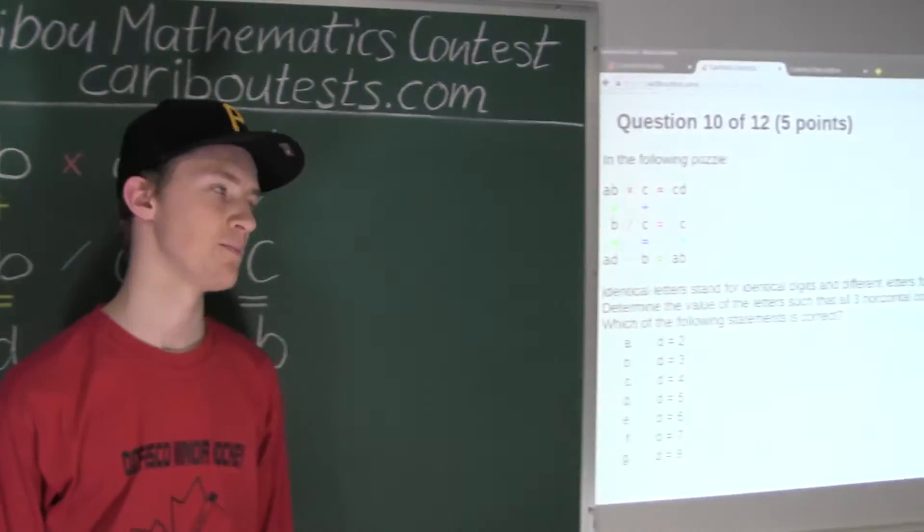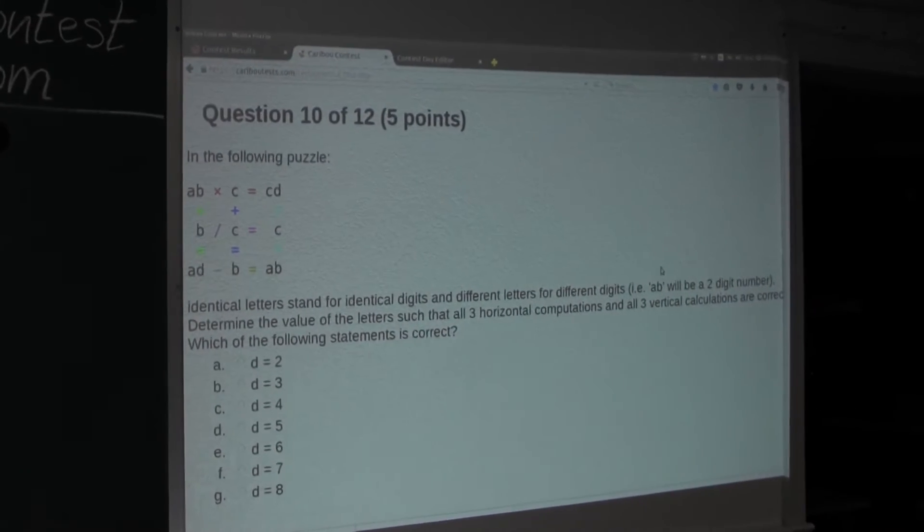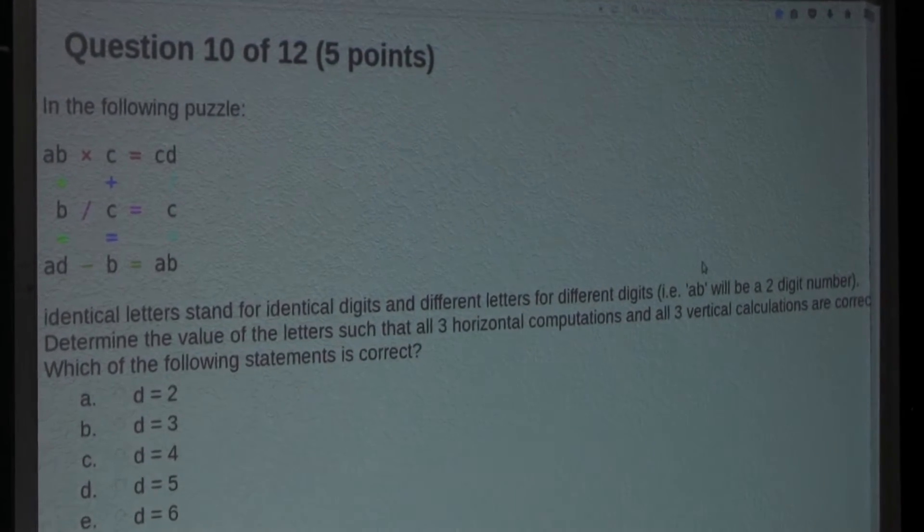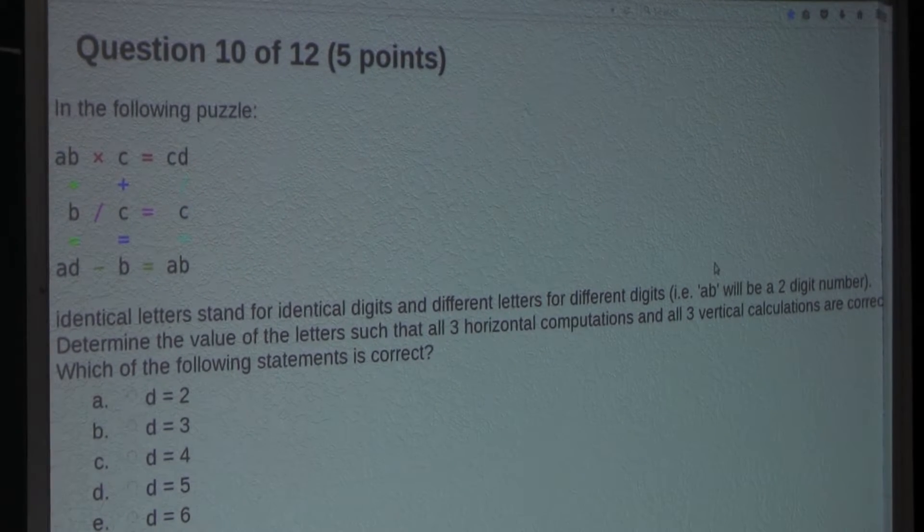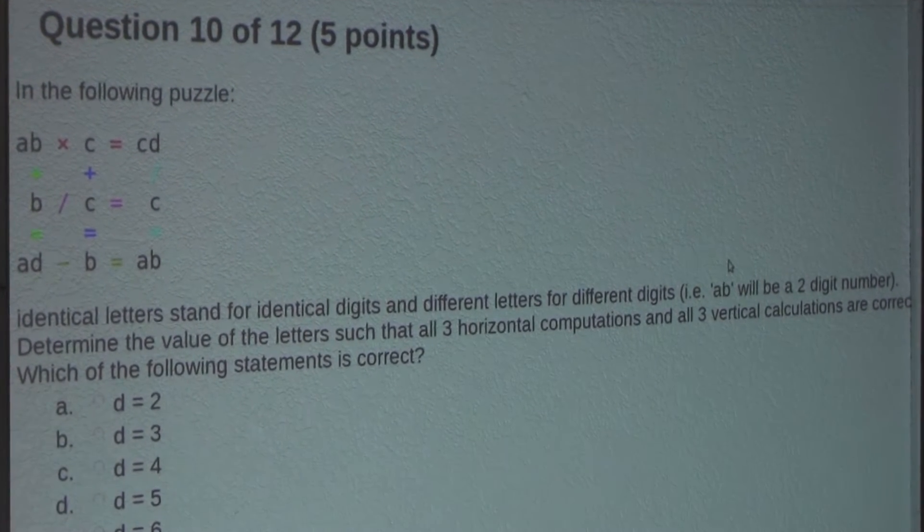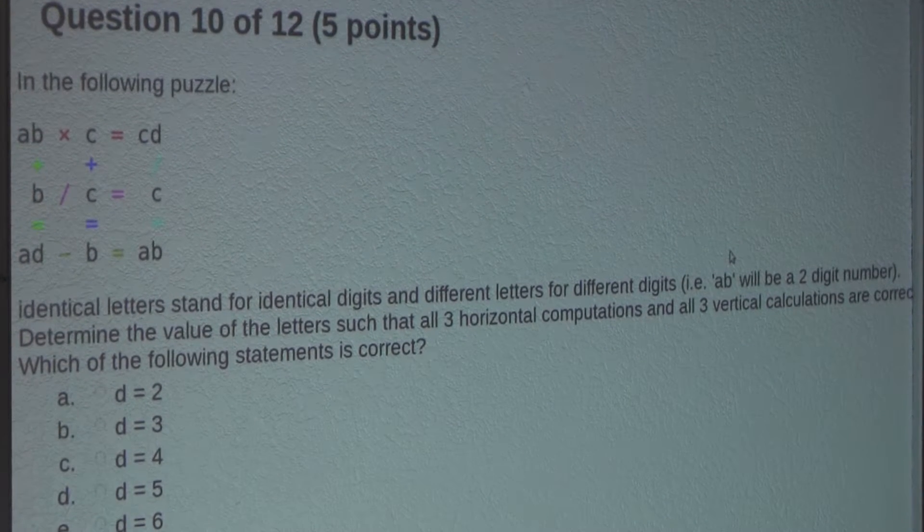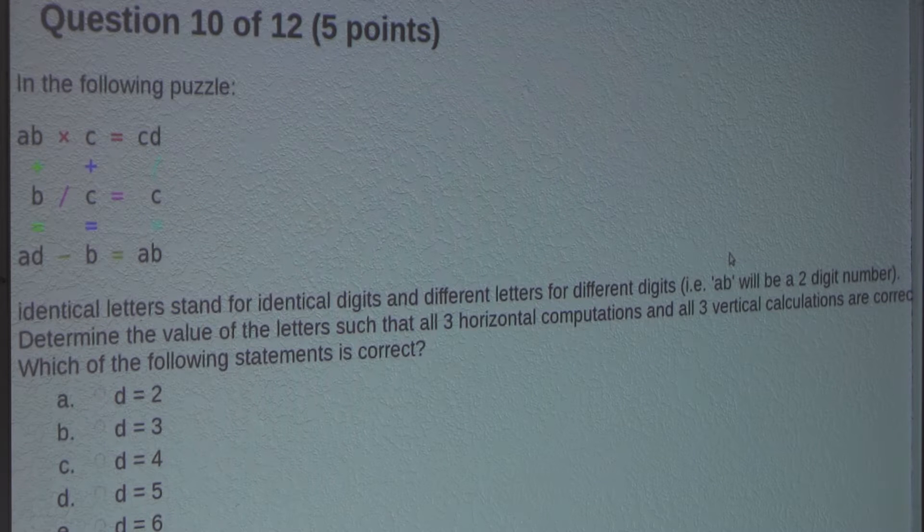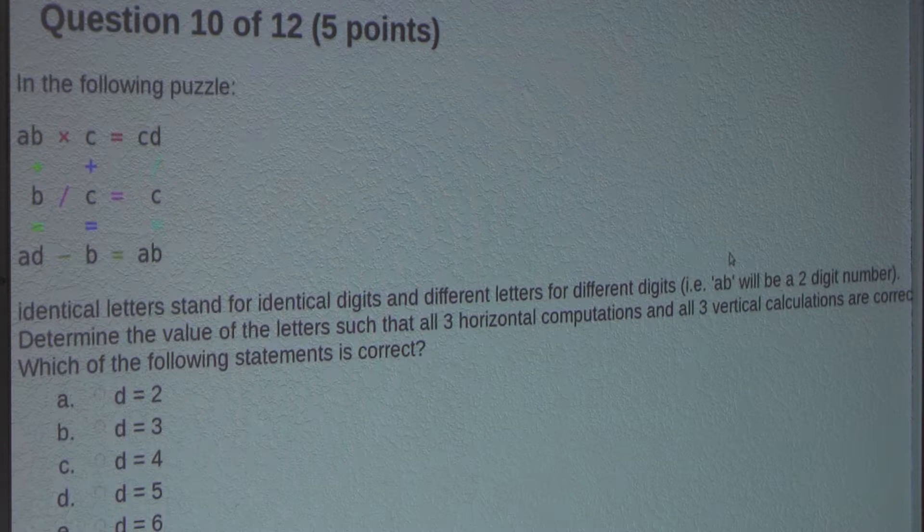So the question is, in the following puzzle, identical letters stand for identical digits and different letters for different digits. For example, AB will be a two-digit number. Determine the value of the letters such that all three horizontal computations and all three vertical calculations are correct.